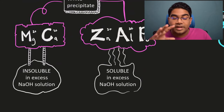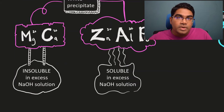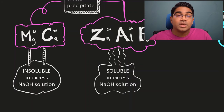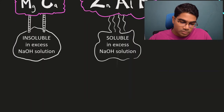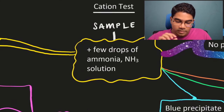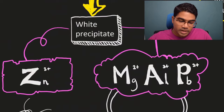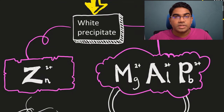Here we still don't have a definitive answer of which ion is present, so we will have to perform further testing. We will go on to the next test which is using ammonia solution. When you add a few drops of ammonia solution, what you will get is a white precipitate for ZMAP. You will notice calcium is missing — I will get to that later.